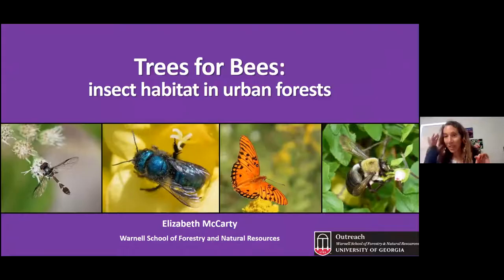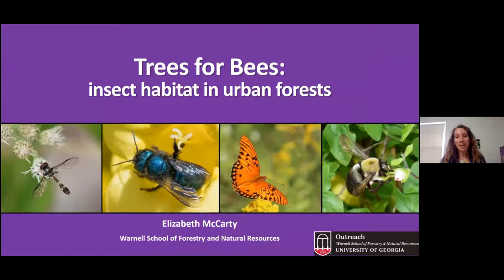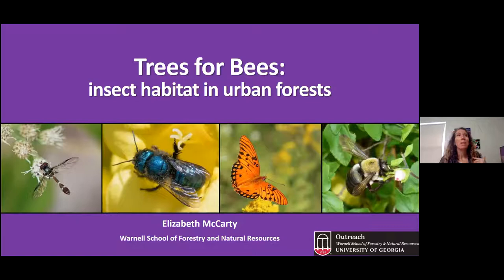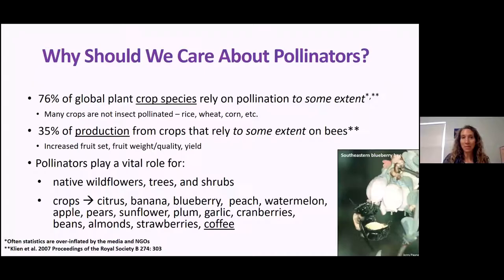I'm talking about Trees for Bees, and as you'll see in this presentation, I'd maybe say Trees for Insects. We're talking about insect habitat and all of the layers of the urban forest. When we sometimes think about pollinators and pollinator habitat, we get in our heads these sunny areas — that's a traditional pollinator garden, which is wonderful. But we're not just limited to the sunny areas. So first of all, why should we care about pollinators?